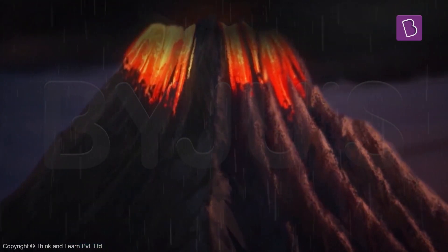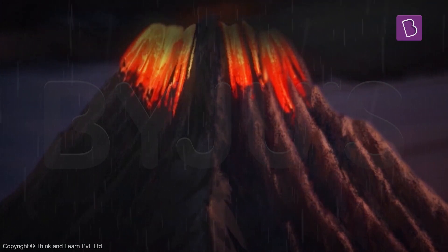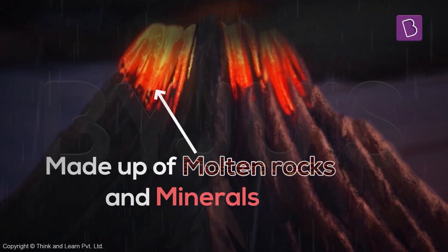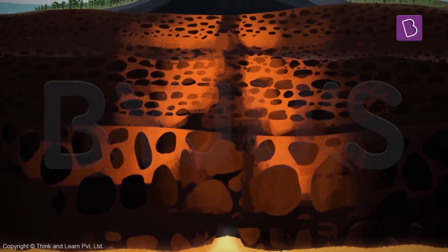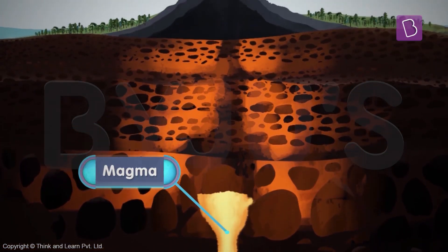Just like the steam. But unlike steam, this hot material that volcanoes spew out are mostly molten rocks and minerals. And this material is called magma.